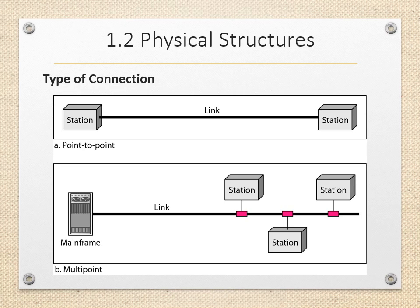This link is a duplex link, which means both devices can send and receive messages. The link can be wire, cable, microwave link, or satellite link. Next is multipoint connection, also known as multi-drop connection. In this connection, more than two devices share the same link. Multipoint connection can be spatially shared or time shared. If several devices use the link simultaneously, it is a spatially shared connection. If users take turns, it is a time shared connection.